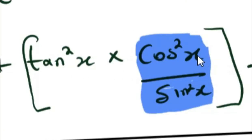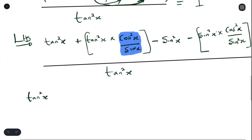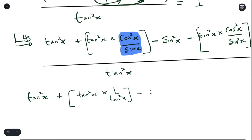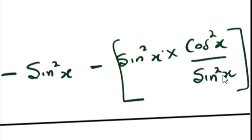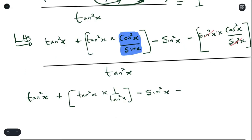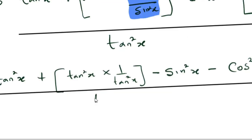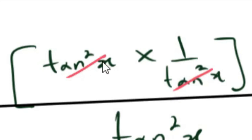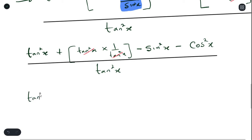We rewrite that term as plus tan squared x times (1 over tan squared x), and we can cross-cancel those tan squared x terms, leaving 1. Also, sin squared x in the denominator cancels with sin squared x in the numerator, leaving cos squared x. So we have tan squared x plus 1 minus cos squared x, all over tan squared x. The tan squared x cross-cancels, leaving just 1 after cancellation.